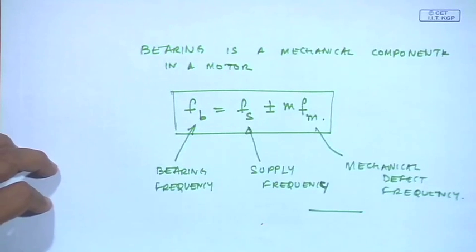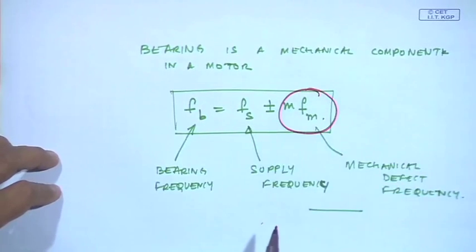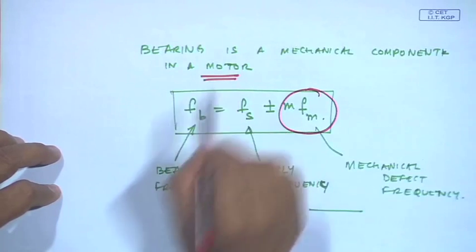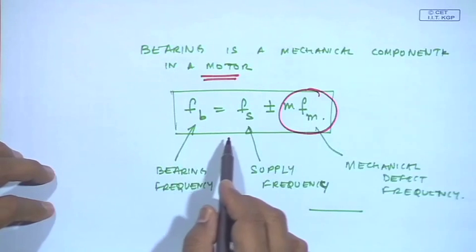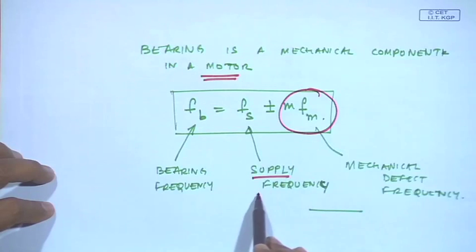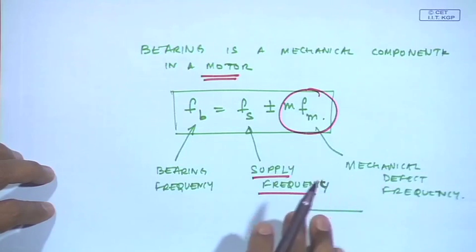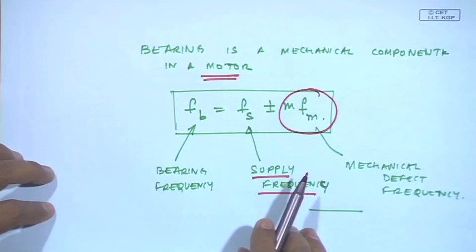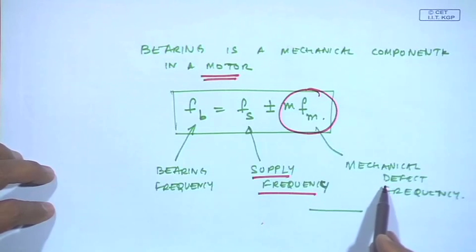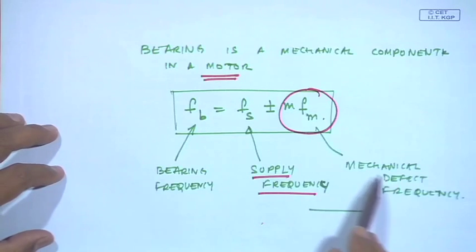This gives us a clue that if I have any mechanical defect frequency in a system which is being driven by an electrical motor, by looking at the motor current spectrum, I can see side bands around the supply frequency. If I have a system driven by an electrical motor and this mechanical system has defects, I will see these defect frequencies come as side bands around the supply frequency.